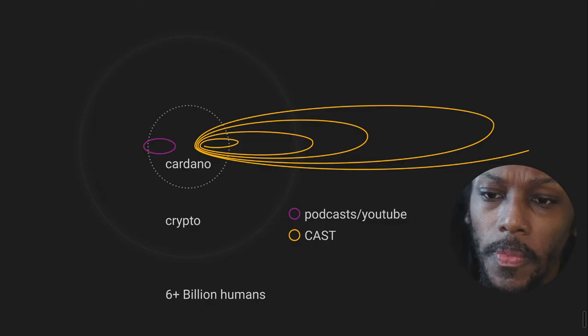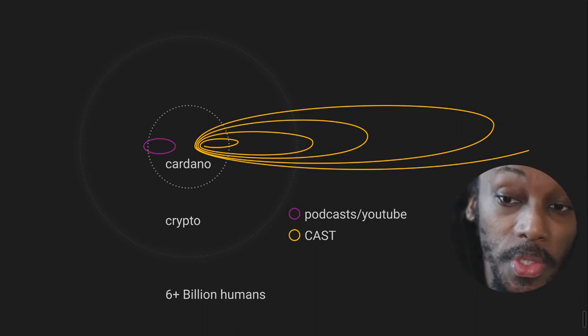Let's just jump into it. Here you've got a simple illustration where you've got concentric circles in the middle. You've got Cardano, and then outside of that you've got the broader crypto audience, and then beyond that you've got basically everyone else - six plus billion humans.